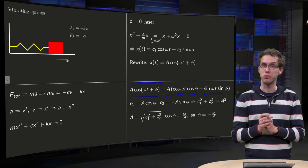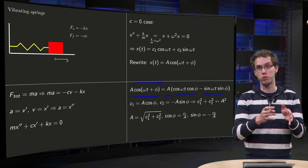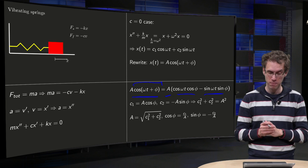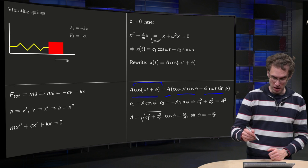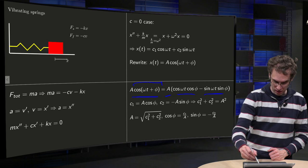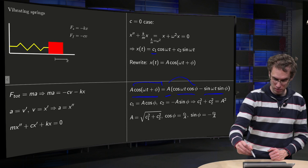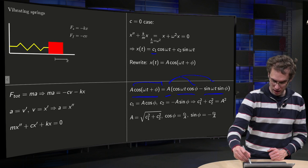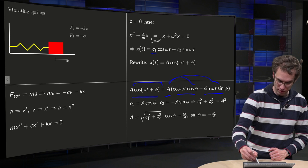So the formula for cos(a plus b) equals cos a cos b minus sine a sine b, and then we compare, we see A times cos phi equals c one and A times minus sine phi equals c two.